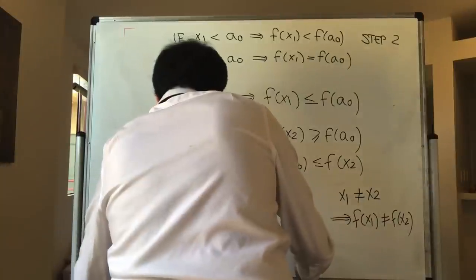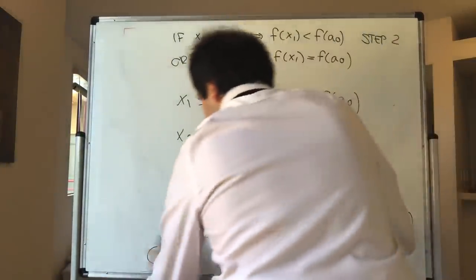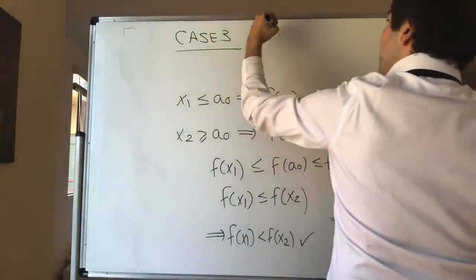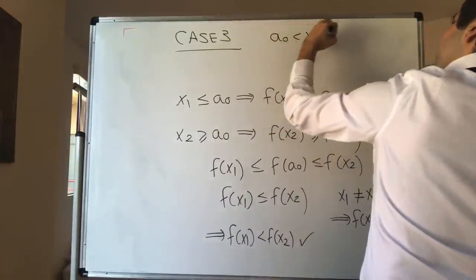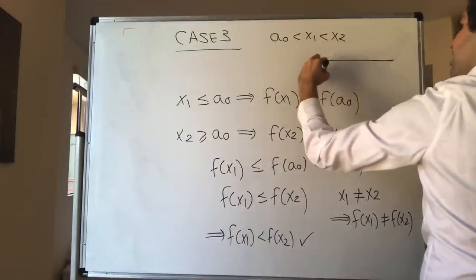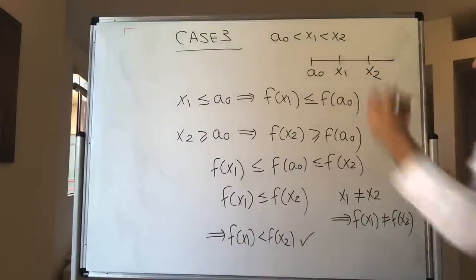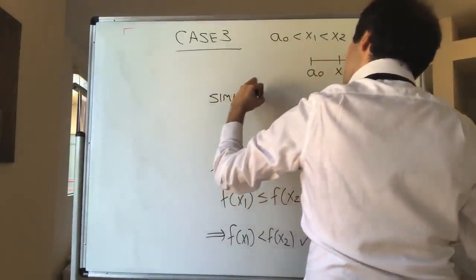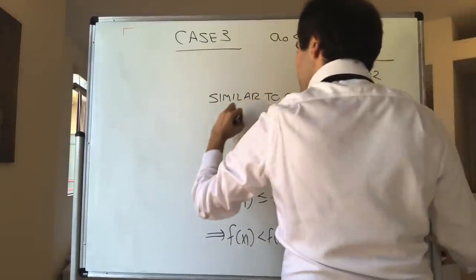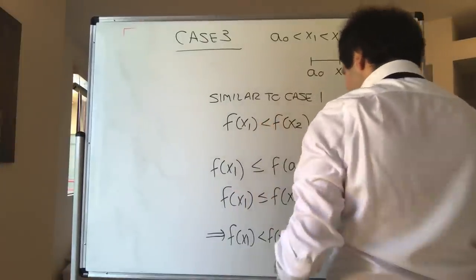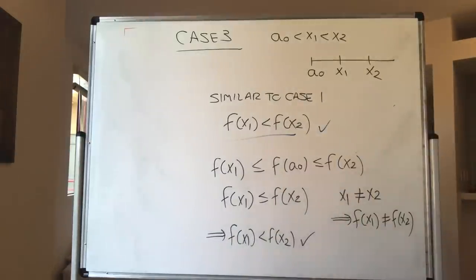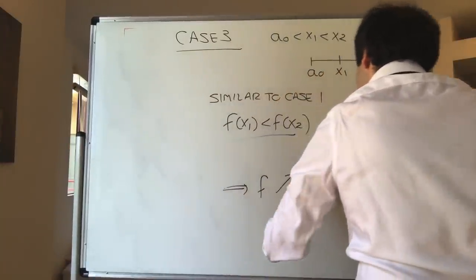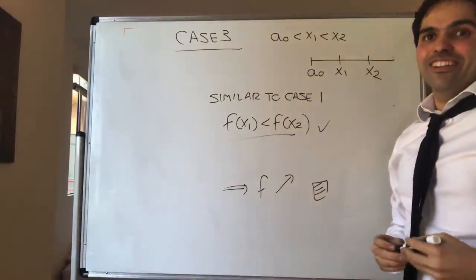And the last case — suppose A0 less than x1 less than x2 — then, as Adele says, hello from the other side, it's similar to case one. Therefore, also in this case we have f of x1 less than f of x2. So f is increasing, and we're done — we can stay home happy. Ta-da! We're done with the result. Thank you very much.